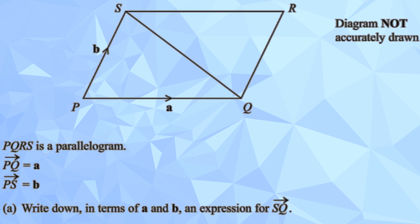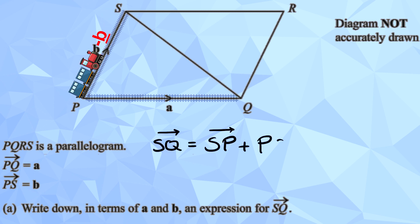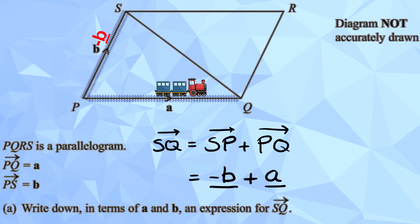Yes, so how come? Well, it's got to go from S to P to Q, so it's S going backwards from b, so that's minus b, then it's going forwards to a, so it's plus.